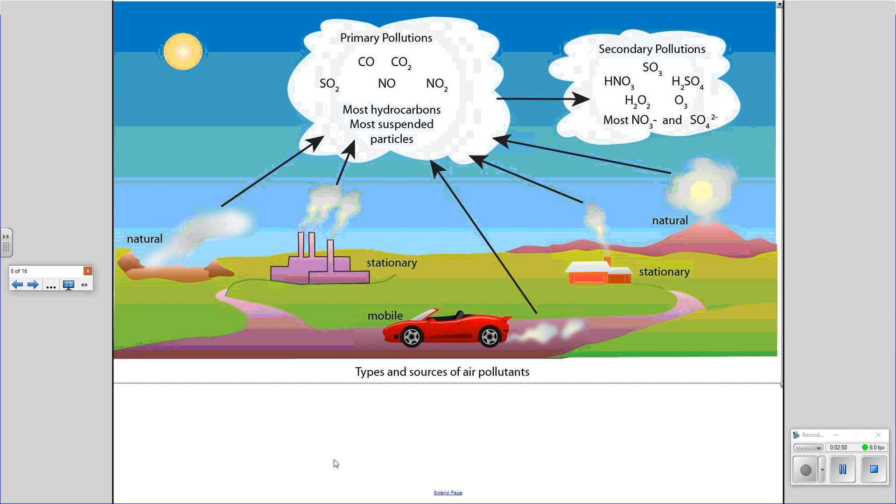Now, essentially some of these primary pollutants can be converted into secondary pollutants. For example, we have sulfur trioxide, sulfuric acid, ozone, and sulfate.